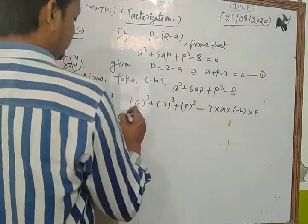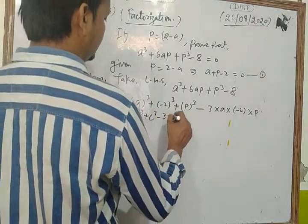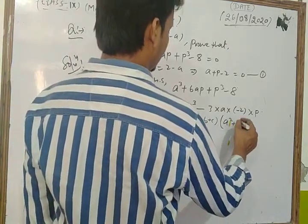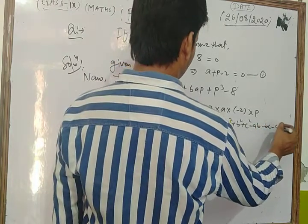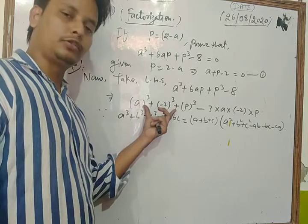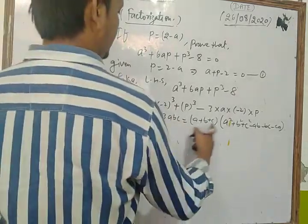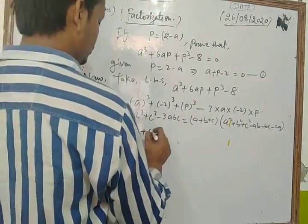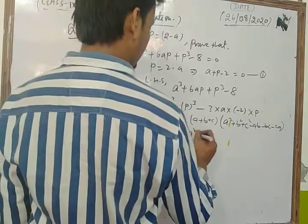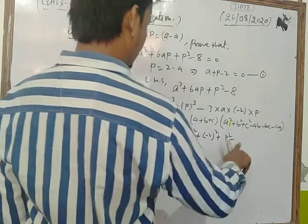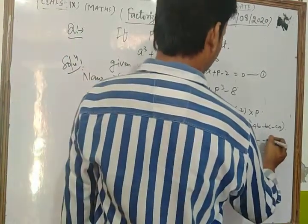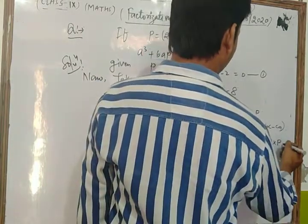Using the identity a³ + b³ + c³ - 3abc = (a + b + c)(a² + b² + c² - ab - bc - ca), we apply it here with a = a, b = -2, c = p. The first factor becomes (a + (-2) + p) = (a + p - 2).